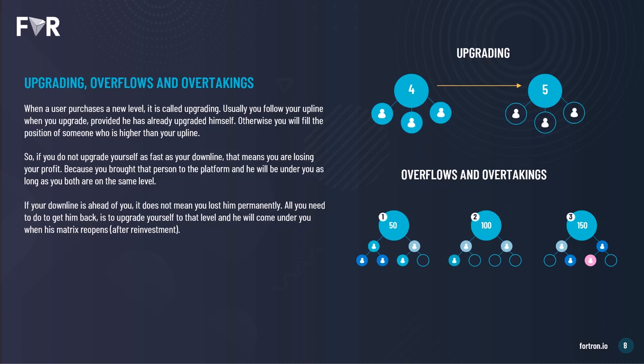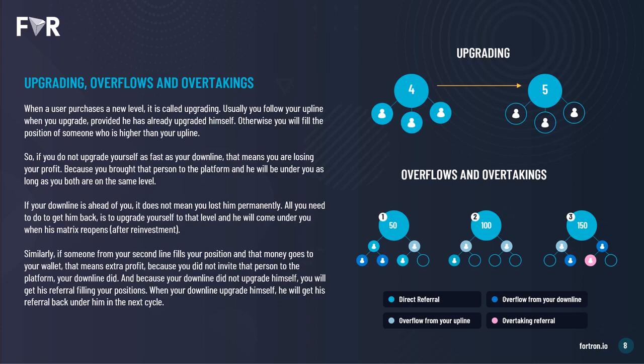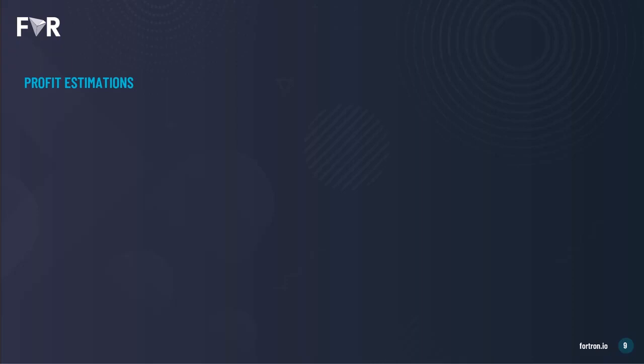However, if a downline gets ahead of you, it doesn't mean you've lost them forever. All you need to do is upgrade yourself to that same level, and they will come back under you when their matrix reopens after reinvestment. Similarly, if someone from your second line fills your position and that money goes to your wallet, that means extra profit — because you did not invite that person, your downline did. And because your downline did not upgrade themselves, you get their referrals filling your positions. When your downline does upgrade, they'll get their referrals back under them in the next cycle.